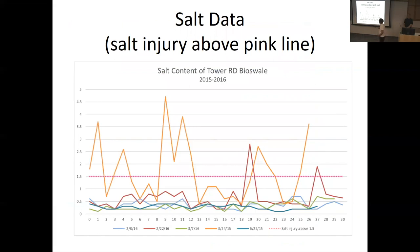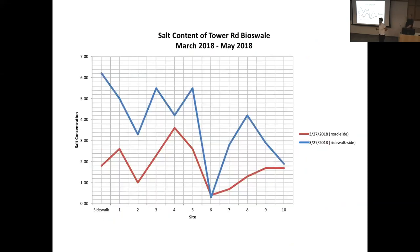We took salt readings in the soil over different times. Anything over 1.5 millimhos per centimeter is toxic. After snow events, we were having quite a lot of toxicity in the soil in terms of salt. Cornell has a no-ice policy — so you can imagine the flip side is a lot of crunchy salt. We also found that more salt was coming from the sidewalk side than the road side — because the bioswale cross-pitches in, all that salt being put on the sidewalk was going right into the bioswale.